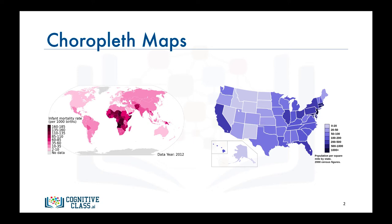The map to the right is a choropleth map of the US showing population per square mile by state. Again, the darker the color, the higher the population. According to the map, states in the eastern part of the US tend to be more populous than states in the western part, with California being an exception.